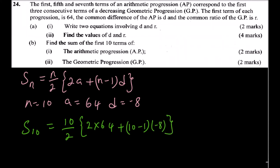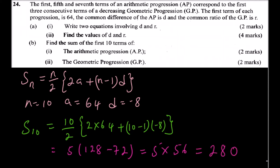Working this out: S₁₀ = 5 times (128 + 9 times minus 8) = 5 times (128 minus 72) = 5 times 56 = 280. So the sum of the first 10 terms of the arithmetic progression is 280. You get two marks — one for the method and one for the correct answer.